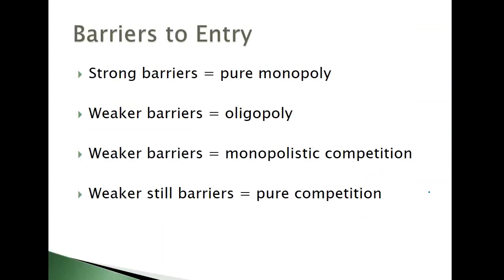Why do monopolies exist? Barriers to entry are a big reason. Monopolies have the strongest barriers to entry. Oligopolies still have pretty high barriers, but loose enough that one or two large companies can compete. Monopolistic competition is next — there are still some differentiated products, so you can get niche markets going. And last, the easiest to enter or exit, is pure competition.